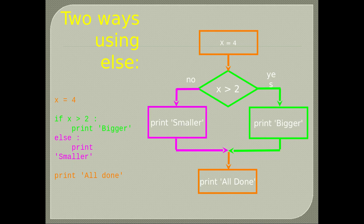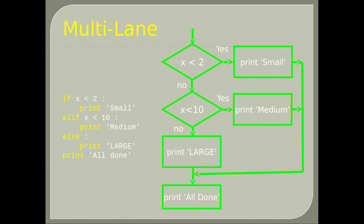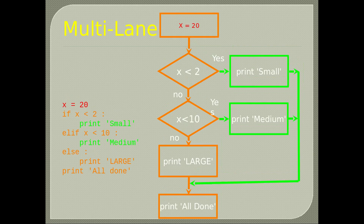Multi-lane decisions are when multiple options are considered. If x < 2, print 'small'. Elif x < 10, print 'medium'. Otherwise print 'large'. Here we have a second example when x equals 20.